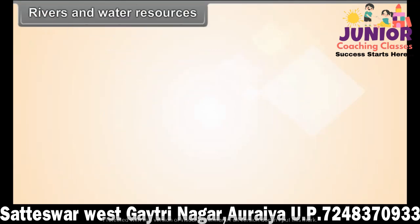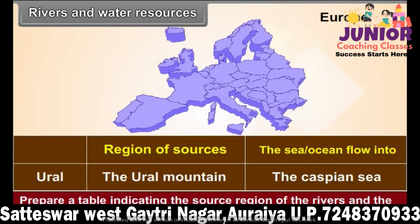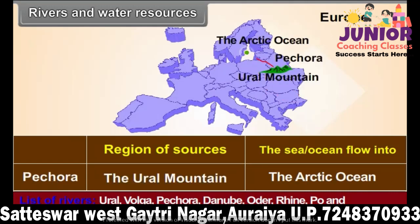Rivers and Water Resources: See color figure 4. Study the direction in which the following rivers flow. Prepare a table indicating the source region of the rivers and the seas they flow into. List of rivers: Ural, Volga, Pechora, Danube, Oder, Rhine, Po and Rhone.